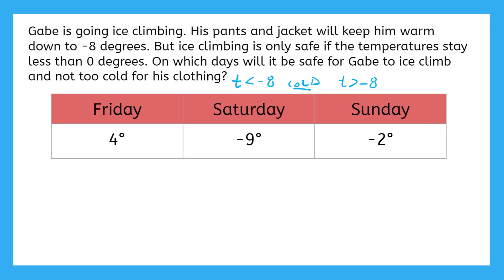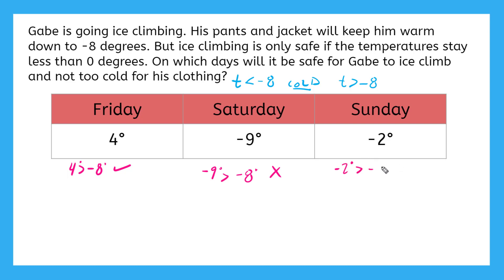Let's check our inequalities. On Friday, T is equal to 4. Is 4 greater than negative 8? Yep, that one checks out. How about on Saturday? Is negative 9 degrees greater than negative 8? No — negative 9 is smaller than negative 8. How about on Sunday? Is negative 2 degrees greater than negative 8 degrees? Yeah, it is. So on Saturday, Gabe will be too cold in his clothes to go ice climbing.